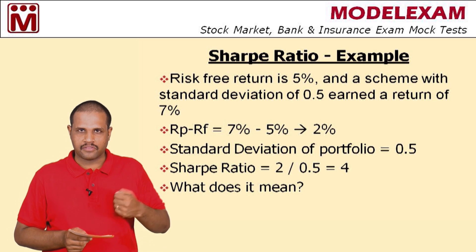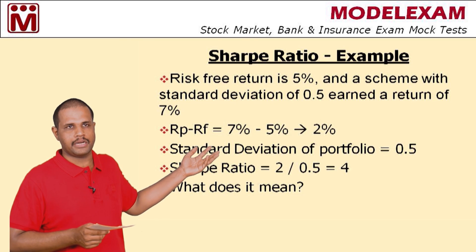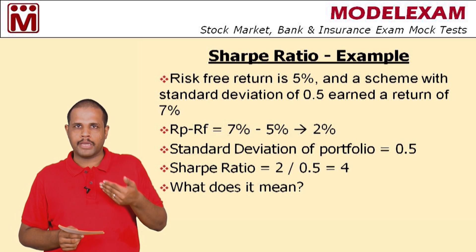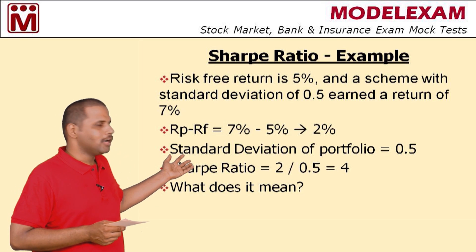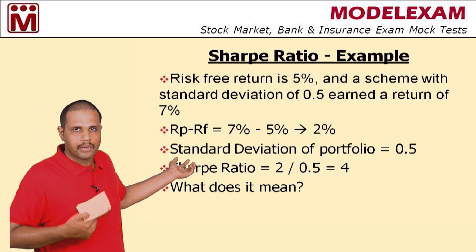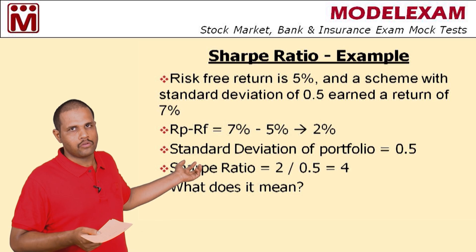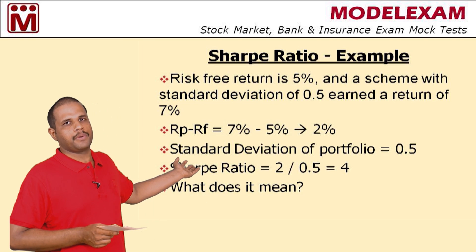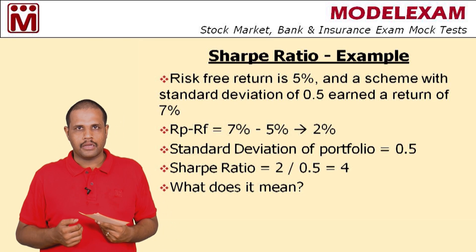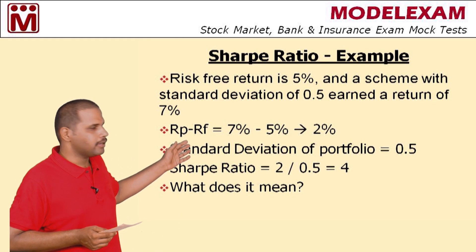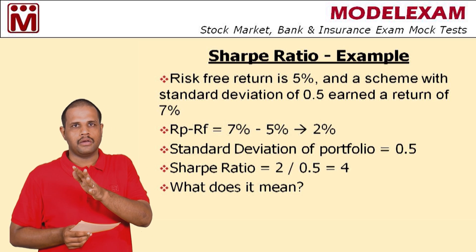What is the risk we take in order to get this risk premium? The risk we take is 0.5 — standard deviation is 0.5. So we divide: 2 divided by 0.5, and the answer is 4. It means 4 times the risk, we are getting risk premium. Standard deviation is 0.5, 4 into 0.5 is 2. So 4 times the risk we take, we are getting risk premium or returns. The Sharpe Ratio tells us how much we get for the risk we take. Higher the Sharpe Ratio, better the risk adjusted performance.